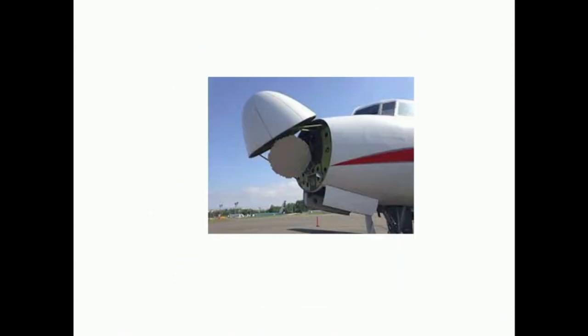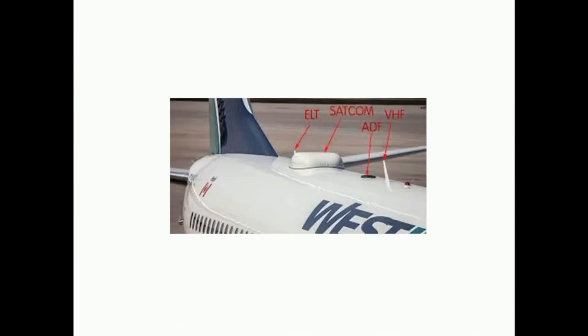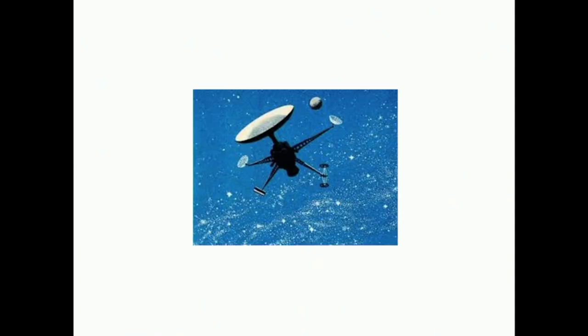If you look at any aircraft, there are lots of antennas for communication with ATC, for detecting the height, and for satellite communication. If you look at a spacecraft, except for the solar cells, all the protruding things are antennas.